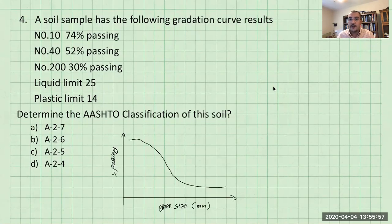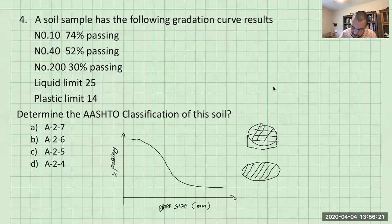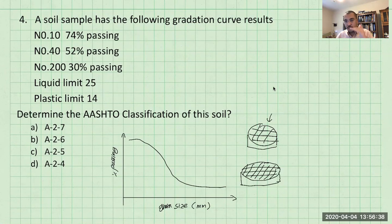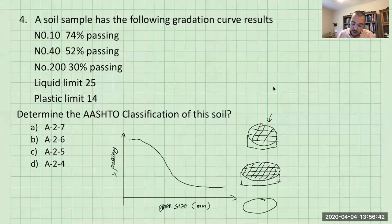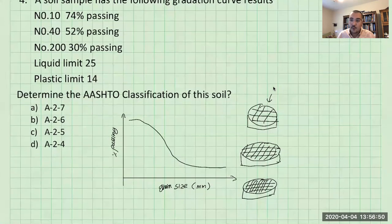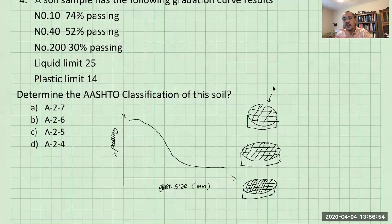What you basically do in what is called the sieve analysis test is you have a bunch of sieves stacked with bigger opening sizes on top. And then as you go down, you will have a sieve that has a smaller opening size and you'll put a certain amount of soil at the top sieve. The sieves are stacked by bigger sizes in the top portion and then as you go down, the opening size will get smaller.